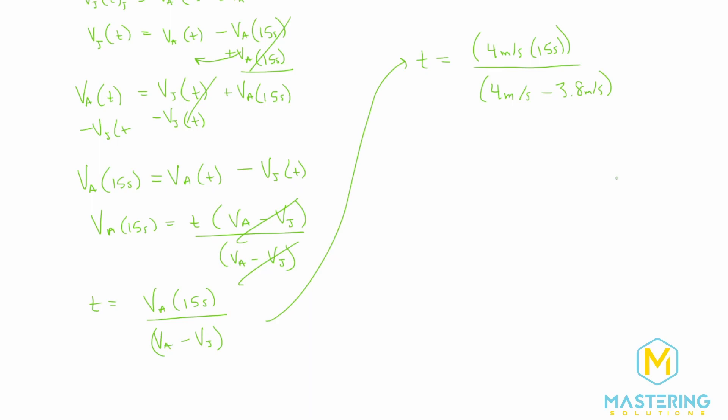Before we do the calculations, let's just think through this. We have meters per second times second, so meters per second times second over one, so the seconds will cancel. On the top, we're going to be left with meters. On the bottom, we have meters per second minus meters per second, so we'll have meters divided by meters per second.